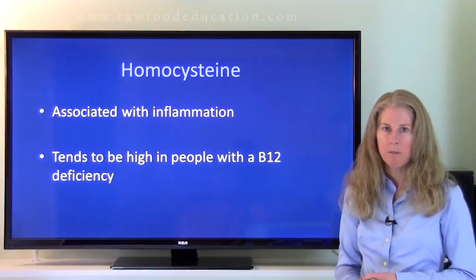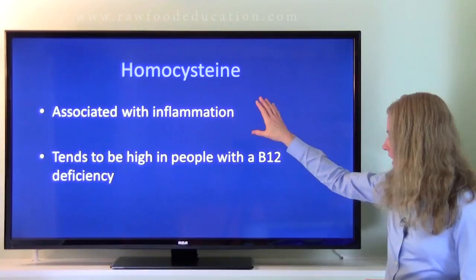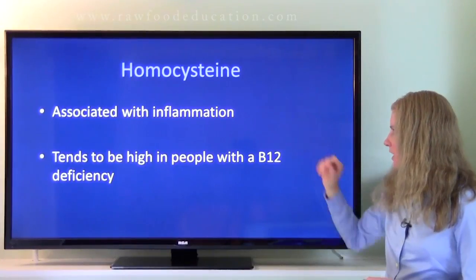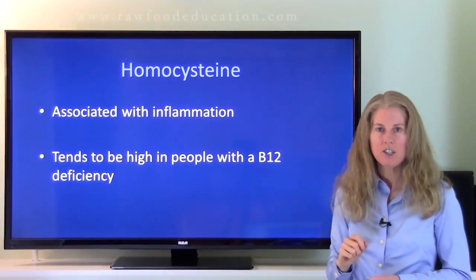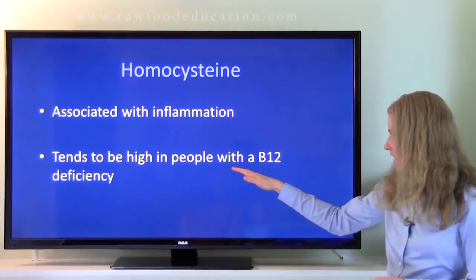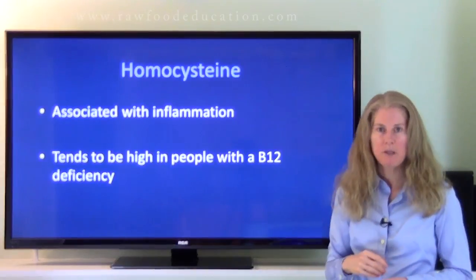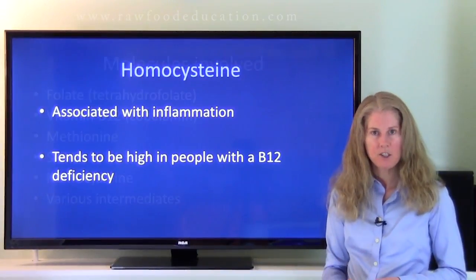Our next molecule is homocysteine, which is generally associated with inflammation in the human body, and it tends to be high in people with a vitamin B12 deficiency.